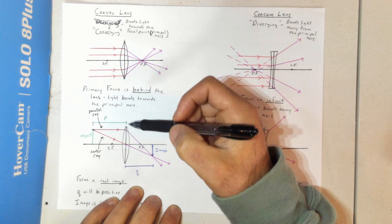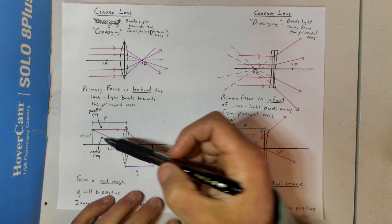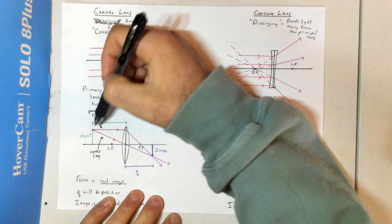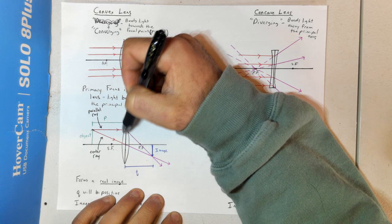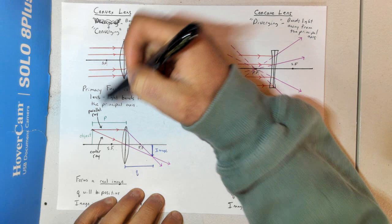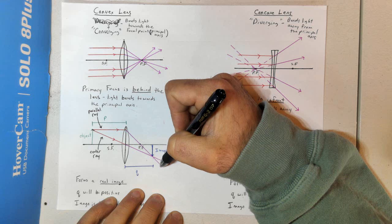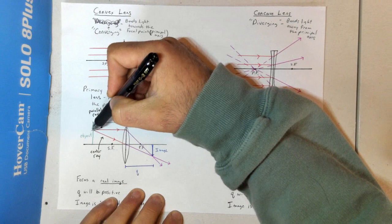When we draw these pictures, we're only going to draw two rays, because it only takes two rays to form an image. The first ray is our parallel ray — it works similarly to mirrors. Our parallel ray goes straight to the lens, or straight to the line of action. By rule, this parallel ray, as soon as it hits the lens, is going to refract and bend through the principal focus.